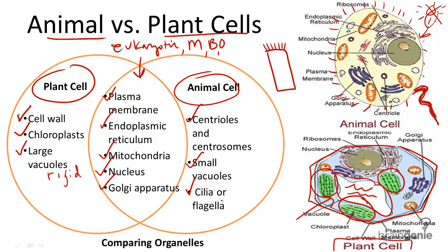So remember that the key differences between plant and animal cells are that plant cells have a cell wall, chloroplasts for photosynthesis, and large vacuoles to help remain rigid, while animal cells do not. Hopefully you'll also recall why. Take a closer look with a microscope and see for yourself.